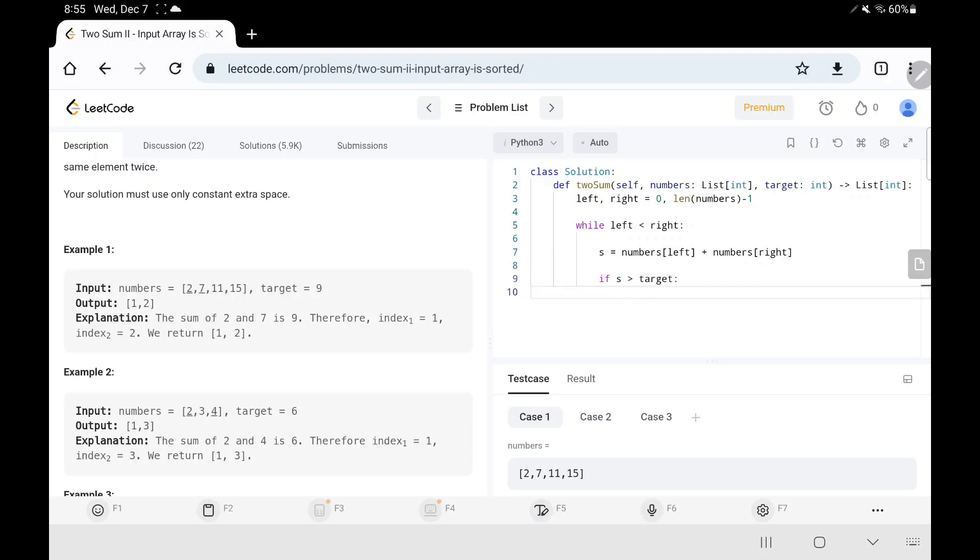So now we will check if the sum is greater than my target, then I will move the right pointer in the opposite direction. Else if my sum is less than my target, then I will move the left pointer to the front.